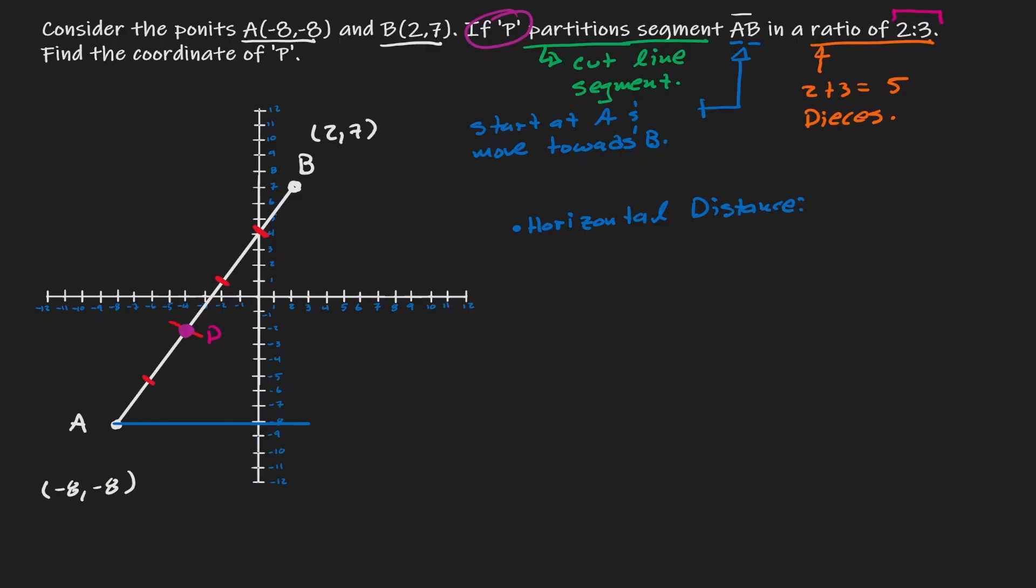To find the horizontal distance, let's find the difference of x's. If we start at negative 8 and go all the way to 2, we will be traveling 10 units.